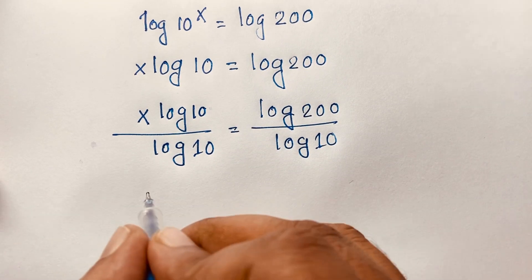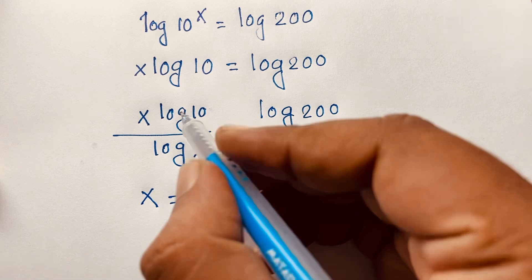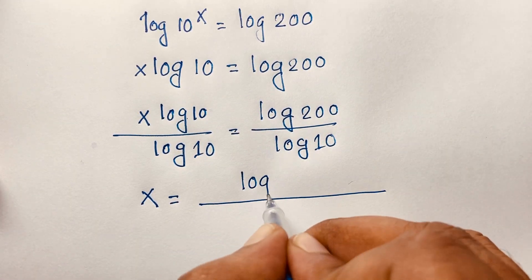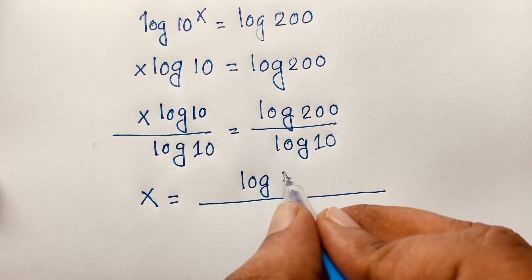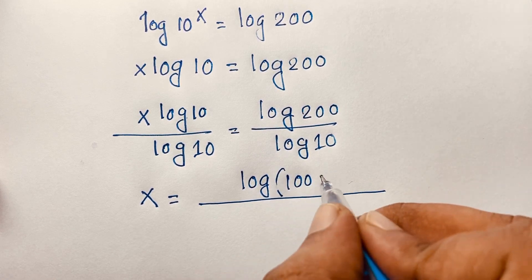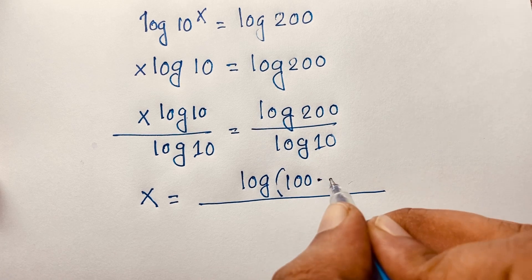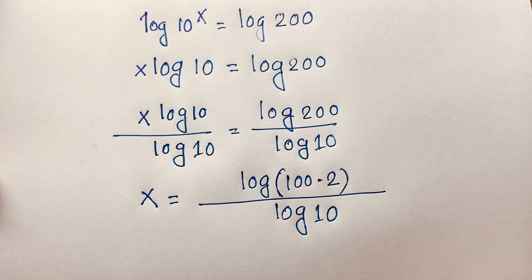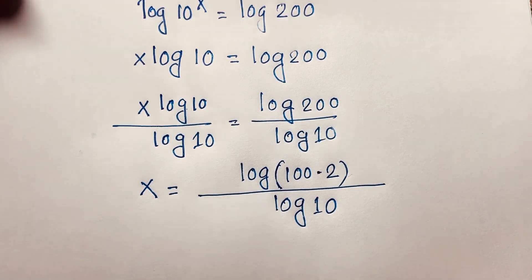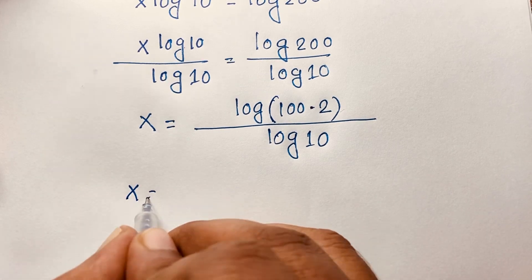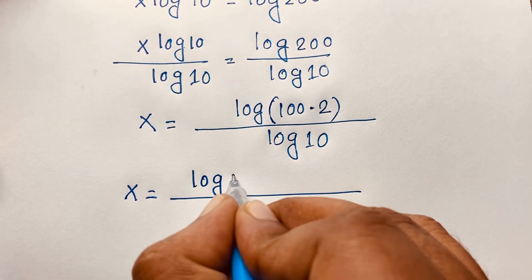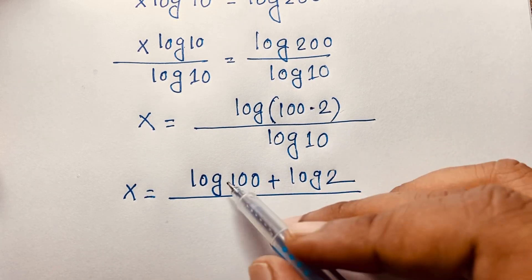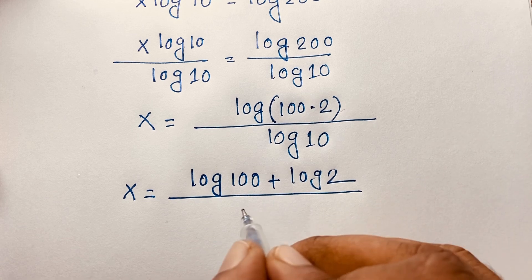You can see easily this x is equal to — because log 10 divided by log 10 cancels out — log 200 divided by log 10. Now, log 200 will be log of 100 times 2, which equals log 100 plus log 2, using the logarithm rule that log AB equals log A plus log B, and here divided by log 10.